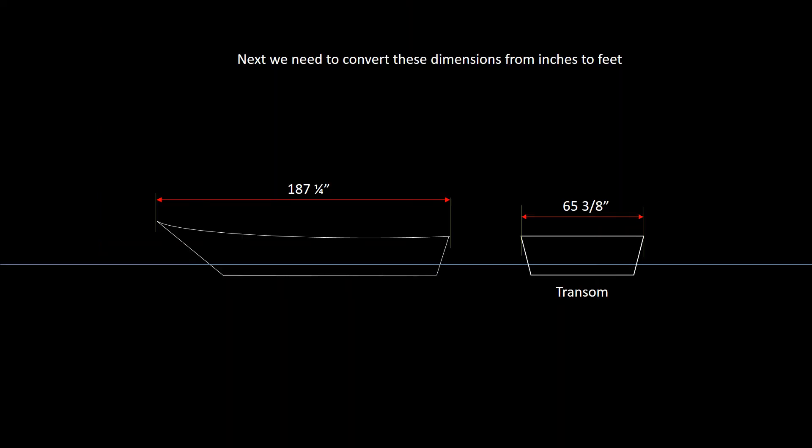So we have those two dimensions that the Coast Guard asked us to obtain in that ruling. Now, I have them in inches. You need to convert these to feet. So just divide the 187 and a quarter by 12 to get 15.6 feet. And divide the 65 and 3 eighths by 12 to get 5.45 feet.